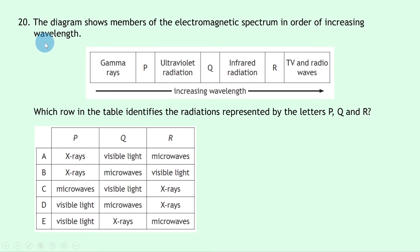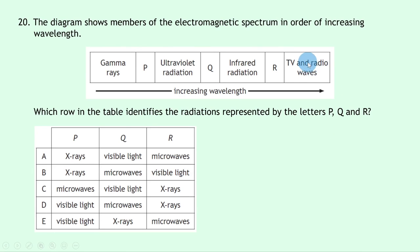Question 20: letters P, Q, and R represent unknown radiations in the electromagnetic spectrum arranged in order of increasing wavelength: gamma, P, ultraviolet, Q, infrared, R, TV and radio waves. Going from short to long wavelength: x-rays come after gamma (P = x-rays), visible light falls between ultraviolet and infrared (Q = visible light), and microwaves sit between infrared and radio waves (R = microwaves). The answer is A.